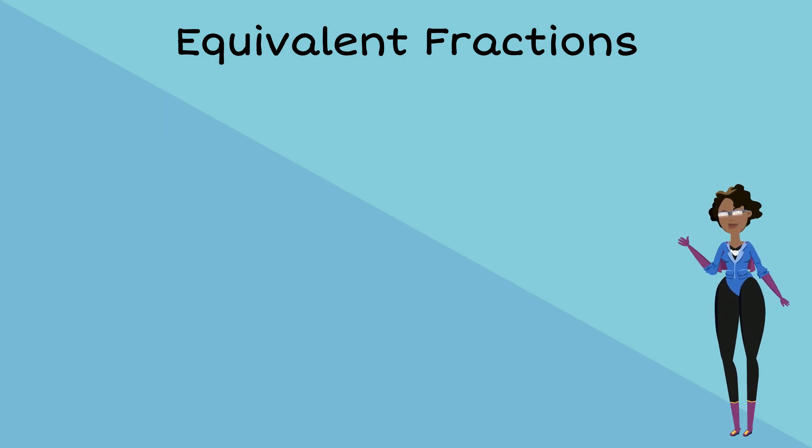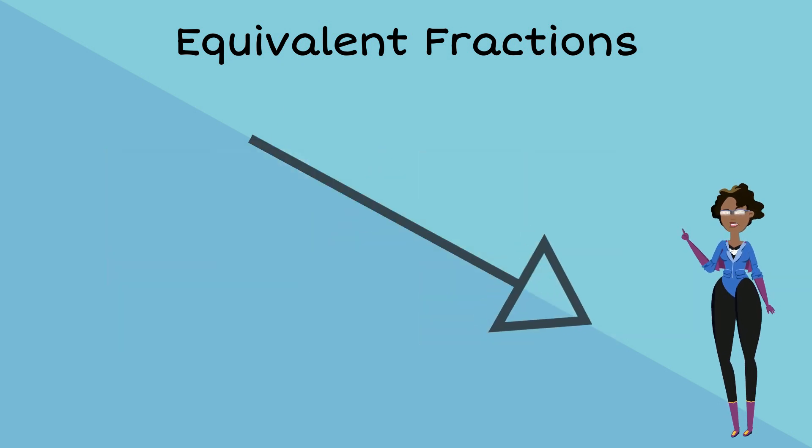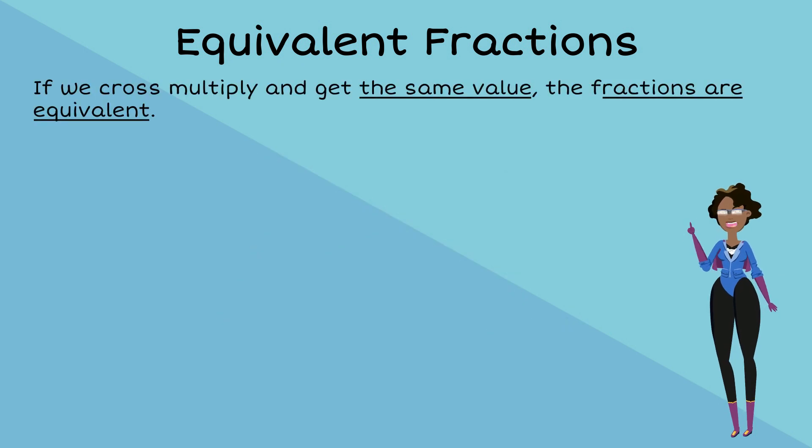There are a few different ways in which we can determine whether fractions are equivalent. We can compare visual representations. Another method is the cross-multiplication of numerators and denominators. If we cross-multiply and get the same value, the fractions are equivalent.